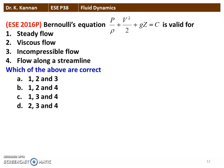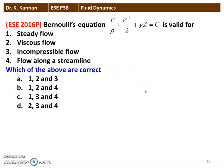The next question is from the 2016 question paper. Bernoulli's equation P/ρ + V²/2 + Gz = C is valid for: steady flow, viscous flow, incompressible flow, and flow along a streamline. The correct combination is 1, 3, and 4 — it is applicable for steady flow, incompressible flow, and flow along a streamline. Bernoulli's equation is not applicable for viscous flow.